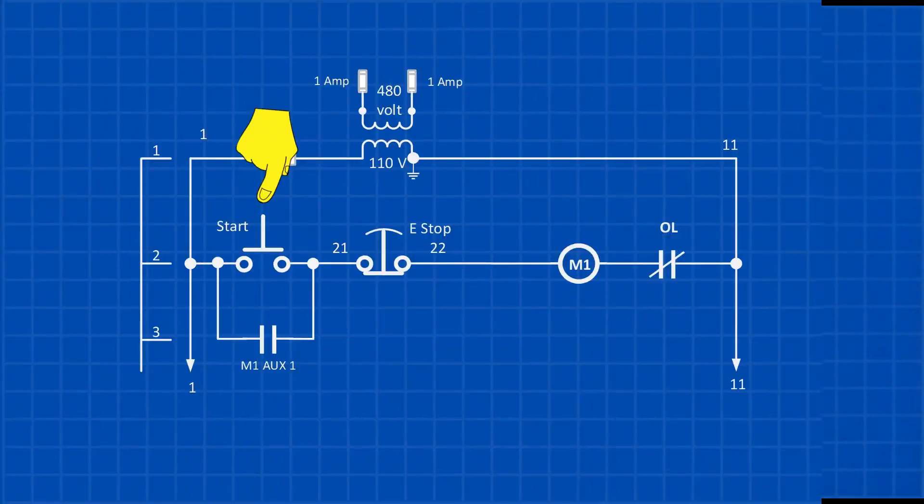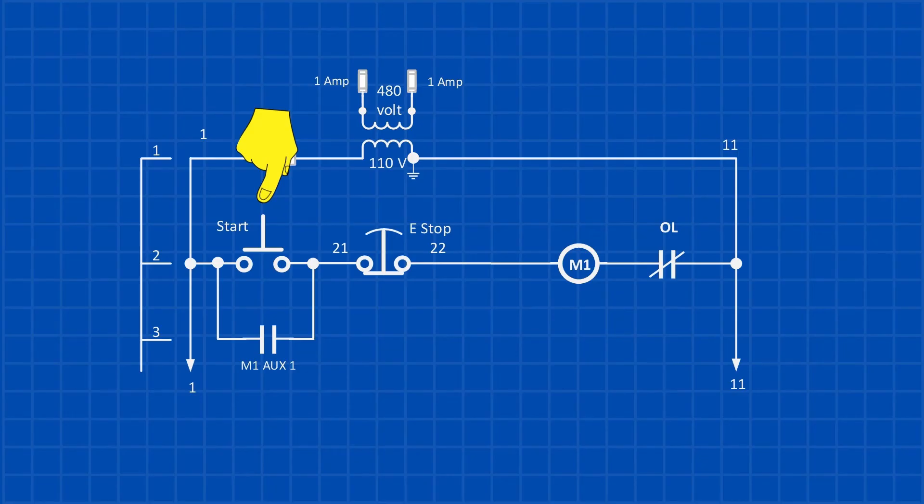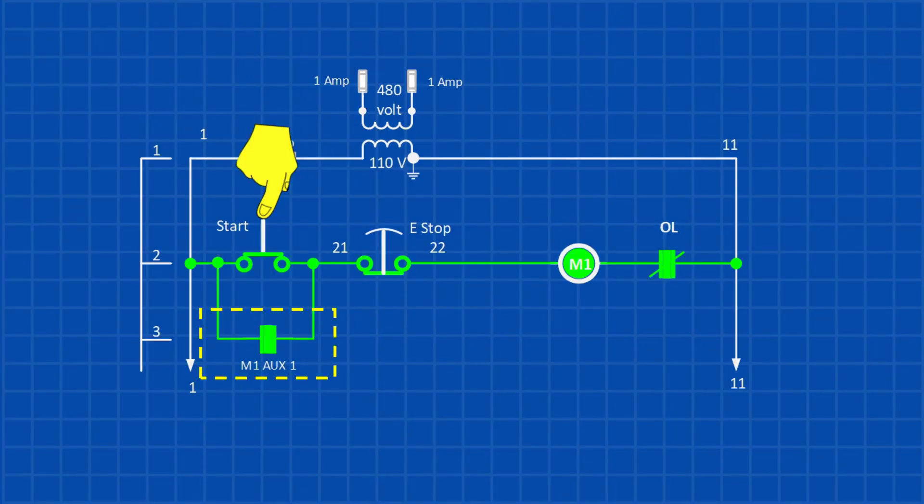A motor starter control circuit uses what's known as a latching circuit. A latching circuit keeps the motor starter energized even after the initial start signal is removed. It works by using one of the motor starter's normally open auxiliary contacts, which is wired in parallel with the start button. When you press the start button, it energizes the M1 coil, closing the auxiliary contact. This contact then continues to supply power to the coil even after you release the start button.